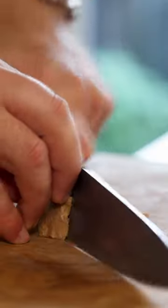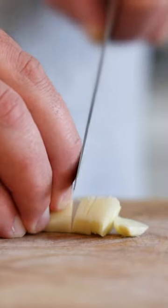Now cut 20 grams of ginger in thin slices and do the same with a clove of garlic and one piece of lemongrass.